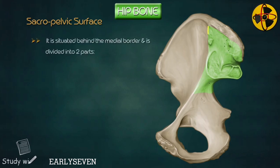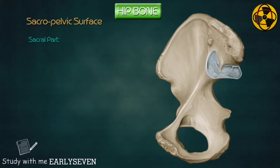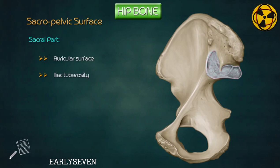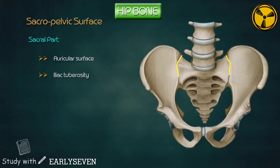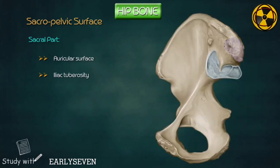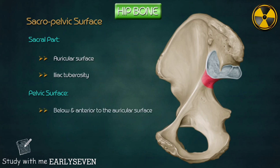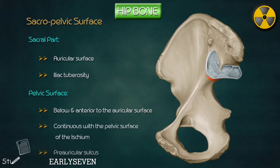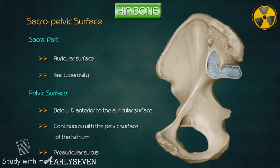Sacral pelvic surface. It is situated behind the medial border and is divided into two parts: sacral part and the pelvic part. The sacral part presents with an auricular surface anteriorly and the iliac tuberosity posteriorly. The auricular surface lies below and anterior to the iliac tuberosity, resembles the shape of a pinna of the ear — hence the name — and articulates with the auricular surface of the sacrum. The iliac tuberosity is a rough area below the iliac crest. The pelvic surface lies below and anterior to the auricular surface, is smooth, and is continuous with the pelvic surface of the ischium. The preauricular sulcus is a groove situated in front of the auricular surface and along the lateral margin of the greater sciatic notch.